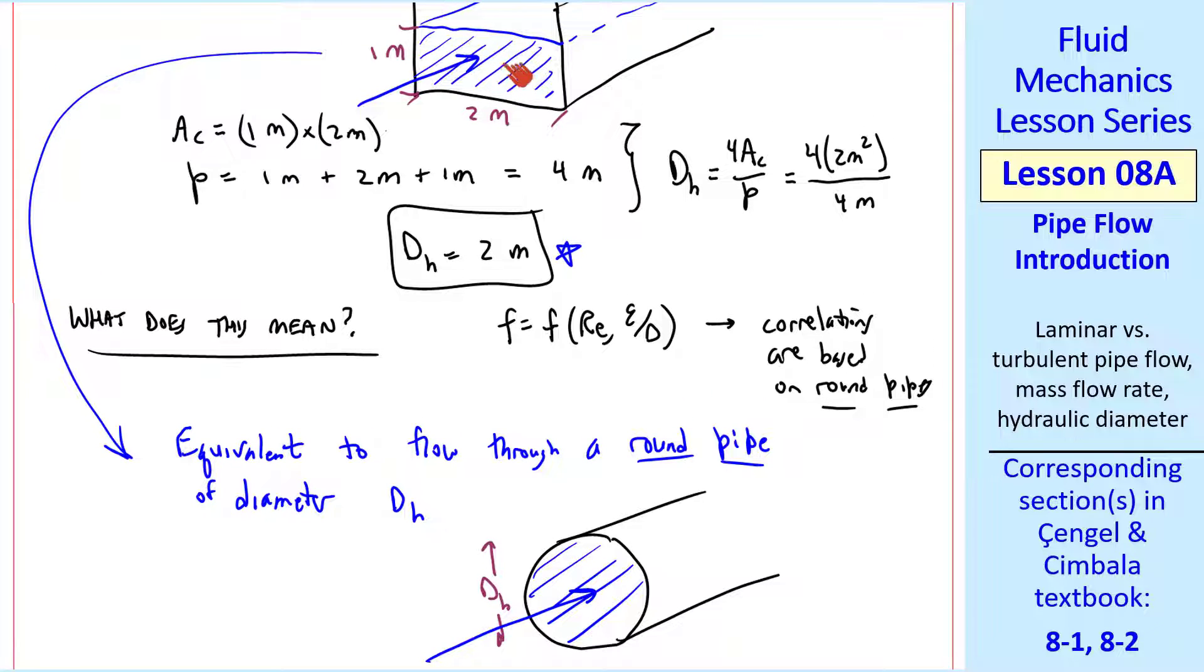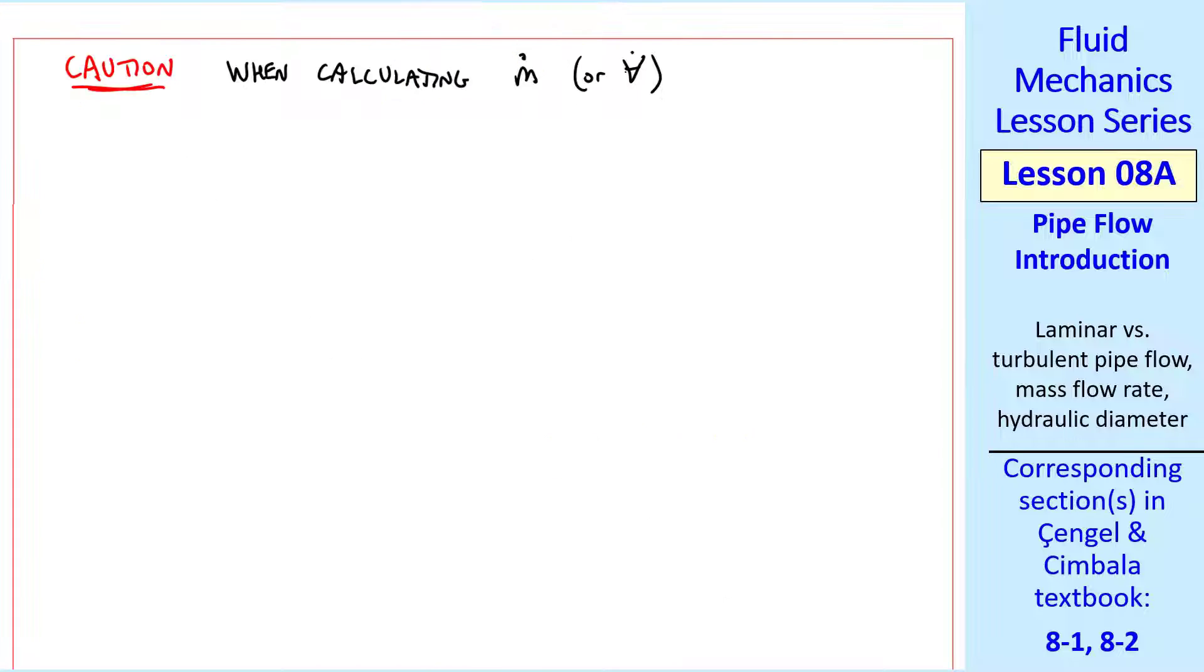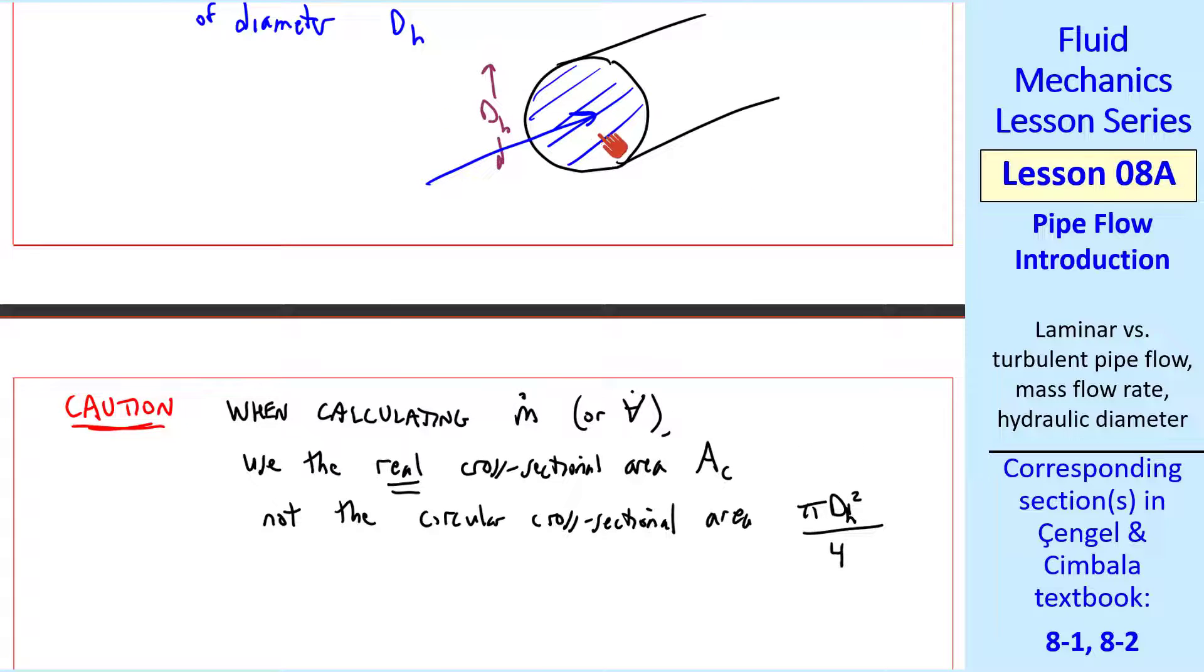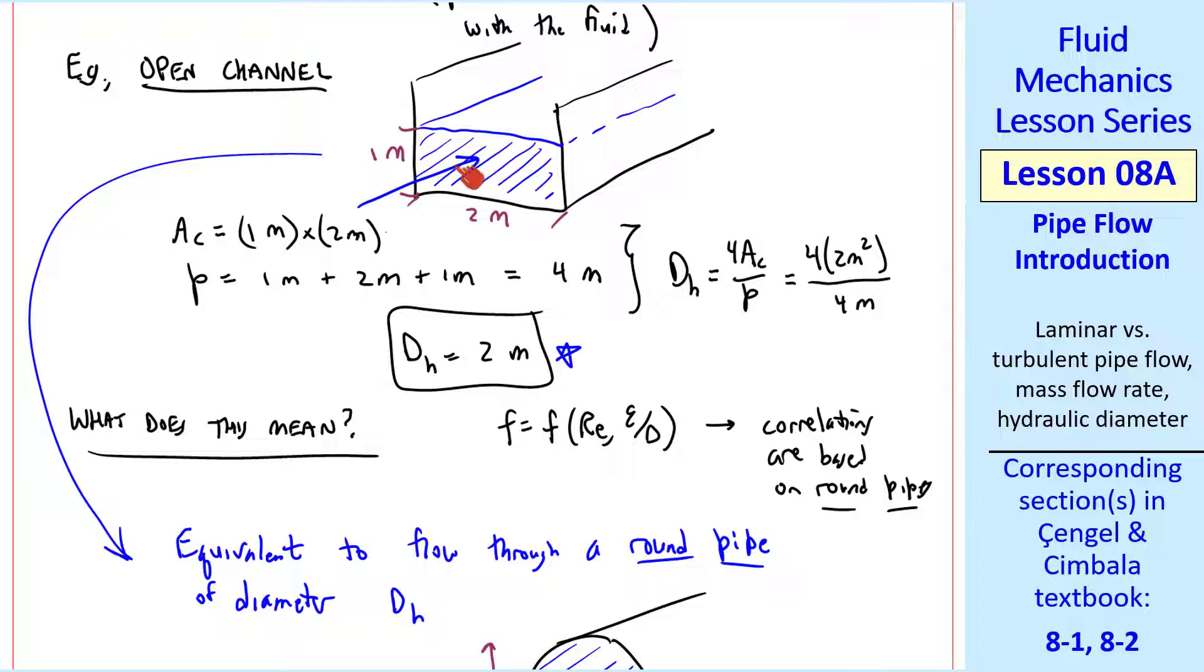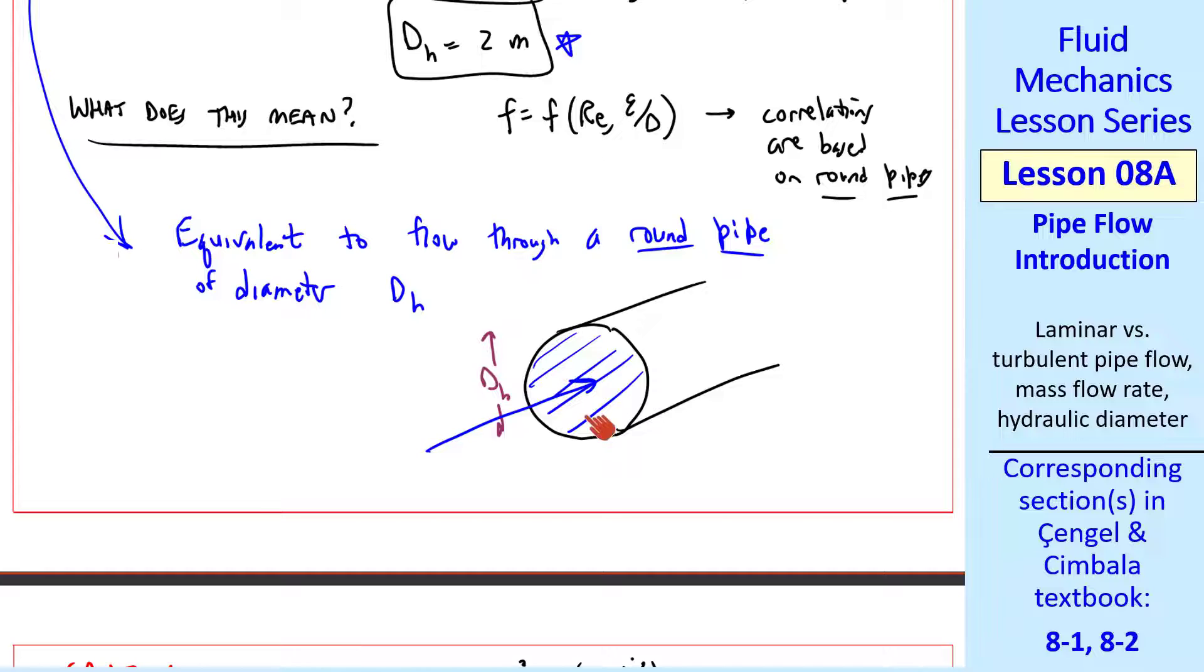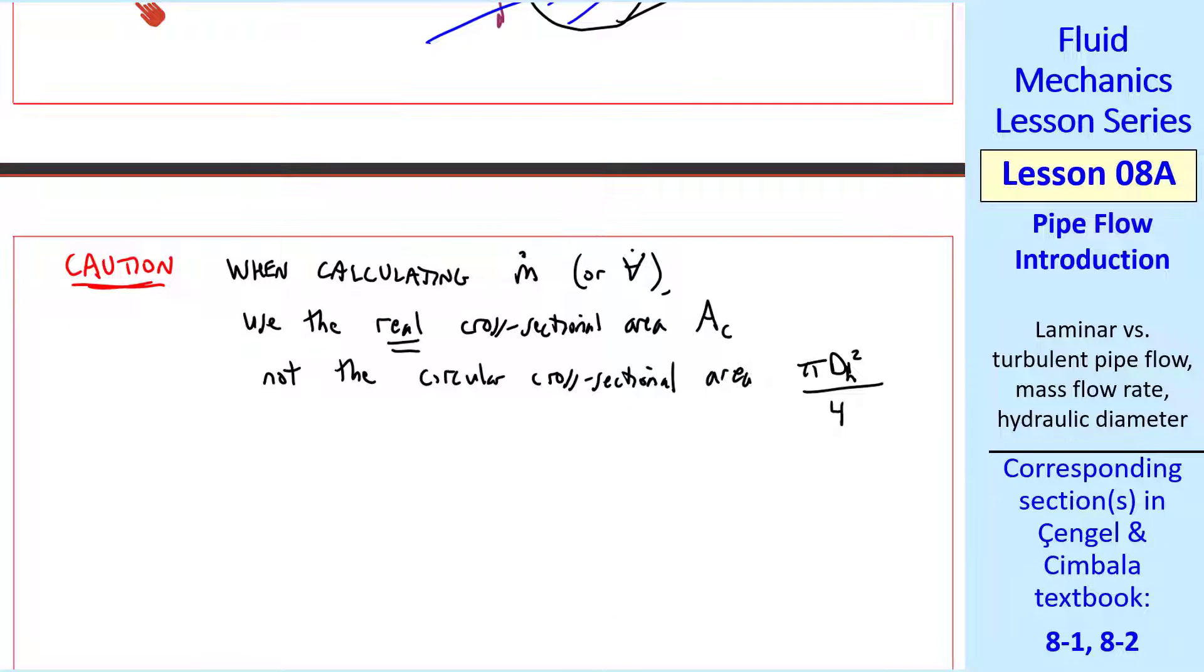But there's a problem with doing this, namely that this cross-sectional area is not the same as this cross-sectional area. So when calculating M dot or V dot, use the real cross-sectional area AC, not the circular cross-sectional area, which would be pi DH squared over 4. In other words, this area. We must use this actual area, not this area, when calculating M dot or V dot.